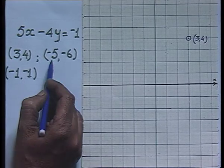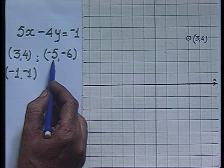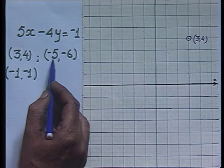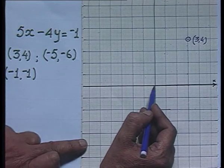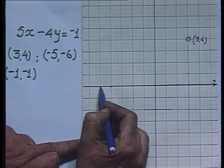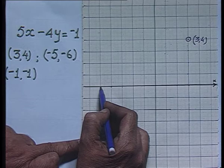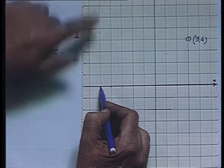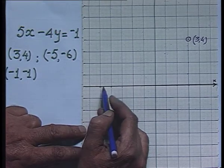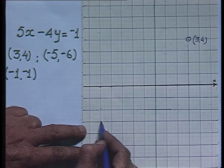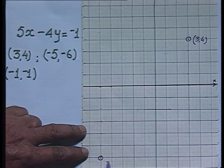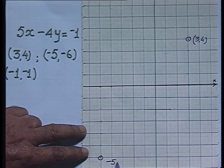Now let us plot the other ordered pair, that is (minus 5, minus 6). The first value in the ordered pair always corresponds to x and the second to y. Since x is minus 5, from the origin I move 5 units towards the left, and for minus 6 units I move downward 6 units. So this is the point whose ordered pair is (minus 5, minus 6).